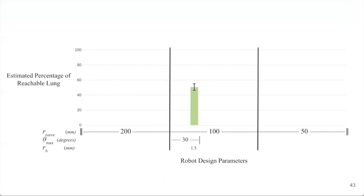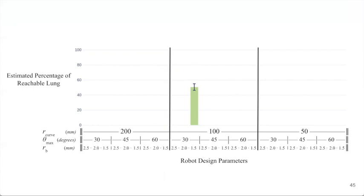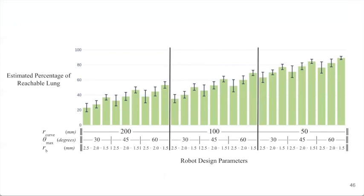We then extend the axes to include all design parameters for the radius of curvature, for the maximum piercing exit angle, and for the bronchoscope radius. And ultimately, we end up with this figure.